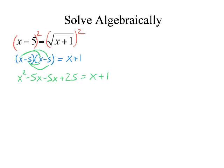All right, now, the left side is not completely simplified, so I can also combine these and get x squared minus 10x plus 25 equals x plus 1.